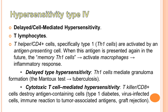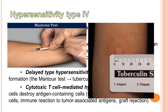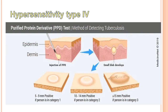We can divide type 4 into 2 subtypes. The first subtype is delayed type hypersensitivity, where TH1 cells mediate granuloma formation. For example, the Mantoux test used in diagnosing tuberculosis — we use intradermal injection, also called the PPD test (Purified Protein Derivative test), to diagnose tuberculosis. Chia loại 4 thành 2 nhóm nhỏ. Nhóm đầu là phản ứng quá mẫn muộn, tế bào TH1 làm trung gian hình thành u hạt. Ví dụ như xét nghiệm Mantoux chẩn đoán bệnh lao, dùng tiêm trong da — xét nghiệm PPD (Purified Protein Derivative).